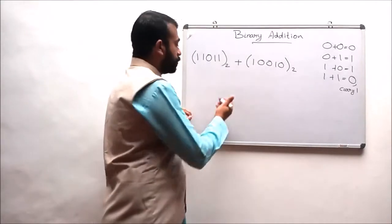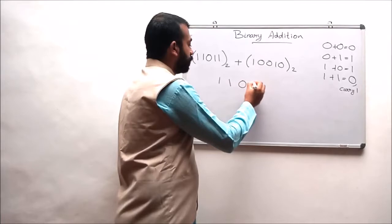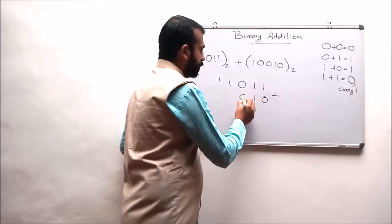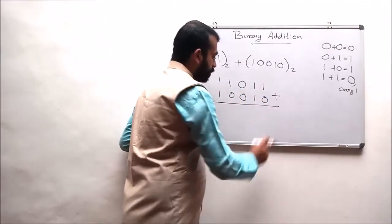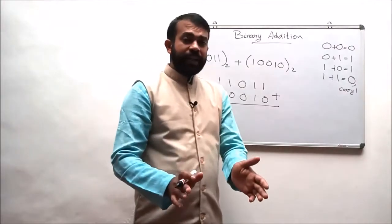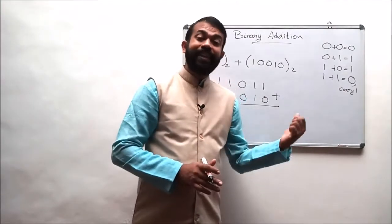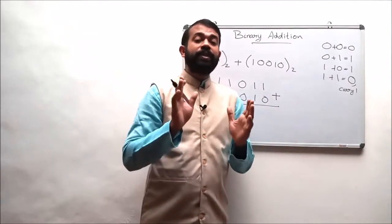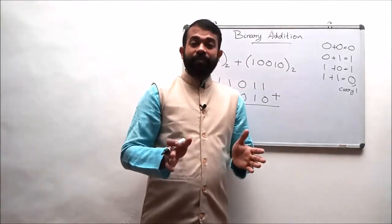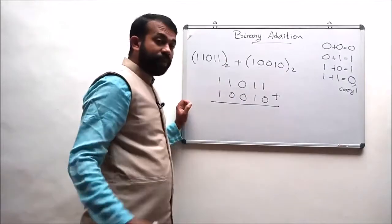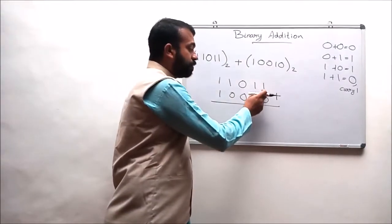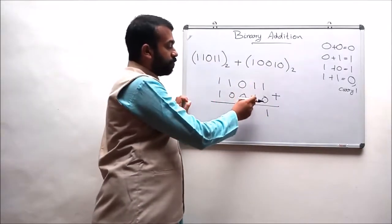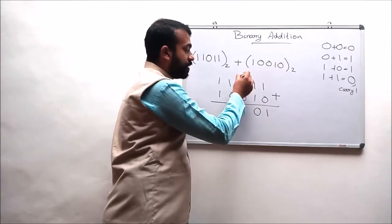So we are writing this number as follows: 1 1 0 1 1 is adding with 0 1 0 0 1. Binary arithmetic always starts from the least significant bit. Whether it is addition, subtraction, multiplication, or division, all binary arithmetic always starts from the least significant bit or LSB. So when we are starting from the LSB, according to the rule, 1 plus 0 is 1.